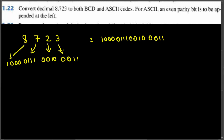The second part is converting 8723 into ASCII codes. To convert decimal digits into ASCII code, the easiest way is to add 30 (hex) to each digit. You can also look at the ASCII table, but the straightforward method is just adding 30, which gives the ASCII code directly.